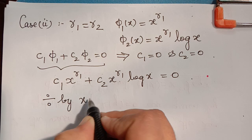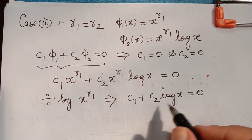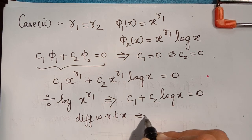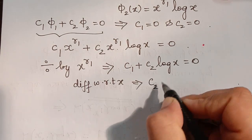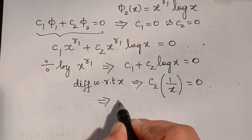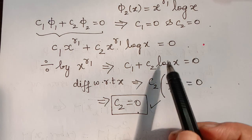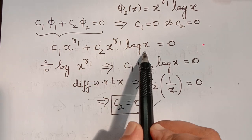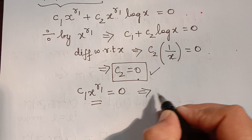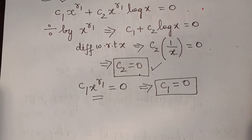Dividing by x^r₁ we obtain c₁ + c₂ log x = 0. Differentiating both sides with respect to x: c₁ is constant so it becomes 0, and the derivative of log x is 1/x, giving c₂ · (1/x) = 0. Therefore c₂ = 0. Substituting c₂ = 0 back gives c₁x^r₁ = 0, and since x ≠ 0, we get c₁ = 0.